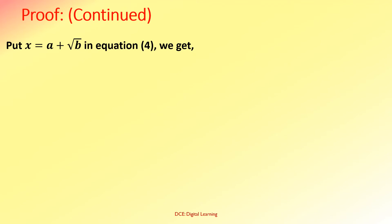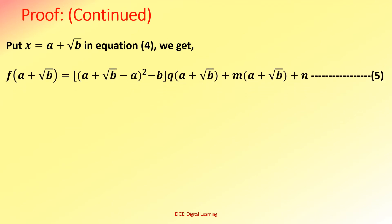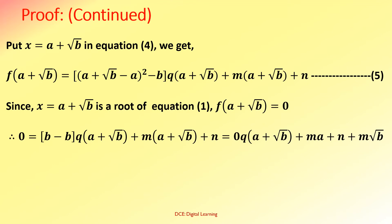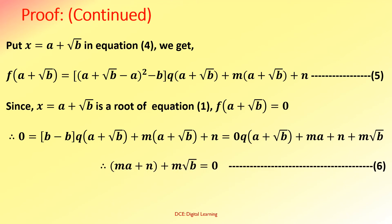Put x = A+√B in equation 4. We get f(A+√B) = ((A+√B−A)²−B)·Q(A+√B) + M(A+√B) + N, equation 5. Since x = A+√B is a root of equation 1, f(A+√B) = 0. Therefore equation 5 gives 0 = (B−B)·Q(A+√B) + MA+N + M√B, which equals 0·Q(A+√B) + MA+N + M√B, equation 6.